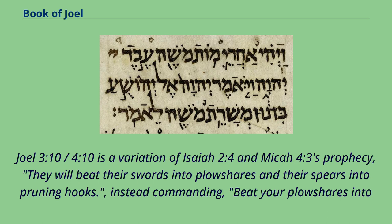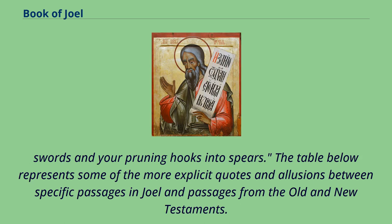Joel 3:10 (4:10) is a variation of Isaiah 2:4 and Micah 4:3's prophecy, 'They will beat their swords into plowshares and their spears into pruning hooks,' instead commanding, 'Beat your plowshares into swords and your pruning hooks into spears.' The table below represents some of the more explicit quotes and allusions between specific passages in Joel and passages from the Old and New Testaments.